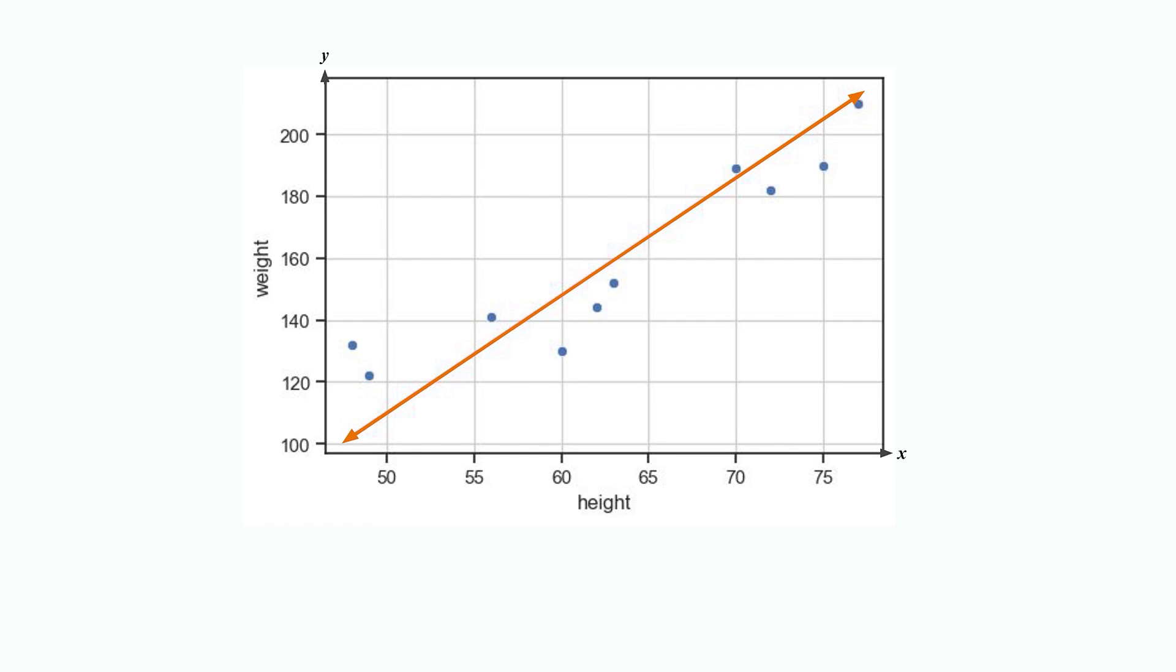Or by calculating the formula of the line using the individual data points we have. The process of finding this line, known as a linear model or a line of best fit, is what we mean when we say linear regression.